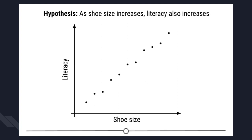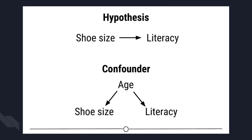Before I collect my data, I need to consider if there are problems with this experiment that might cause an erroneous result. In this case my experiment may be fatally flawed by a confounder. A confounder is an extraneous variable that may affect the relationship between the dependent and independent variables. In our example, since age affects foot size and literacy is also affected by age, if we see any relationship between shoe size and literacy, that relationship may actually be due to age — age is confounding our experimental design.